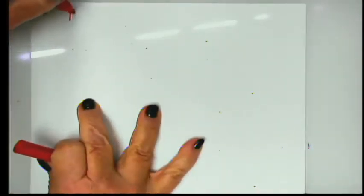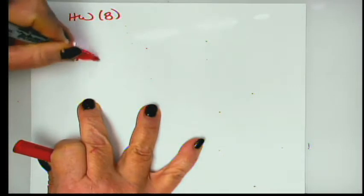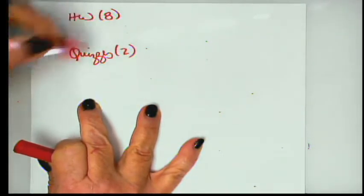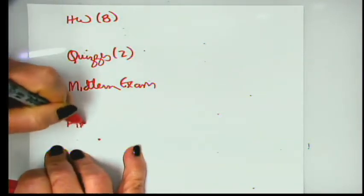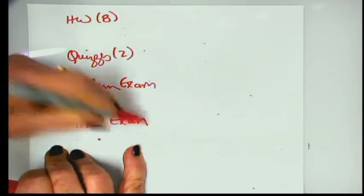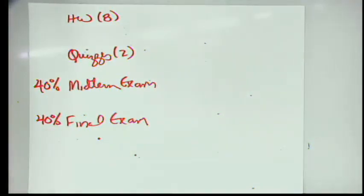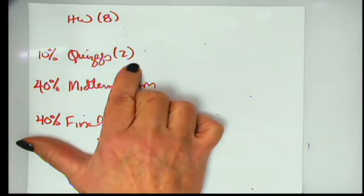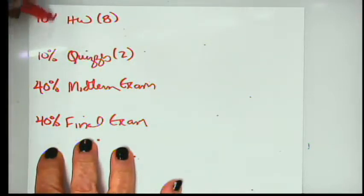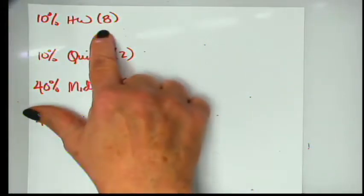Your grade is based on your homework assignments, and I think there are eight of them. The quizzes, which there are two of them. The midterm exam, and the final exam. So the final exam and the midterm exam are both worth 40%, 30% of your grade. The two quizzes are worth a total of 10% of your grade. So each quiz is worth 5% of your grade. And the homework sets are also worth 10% of your grade.